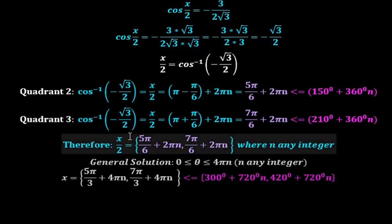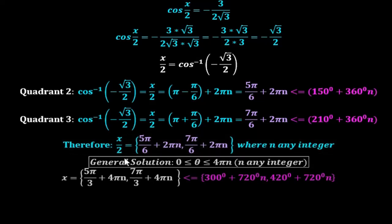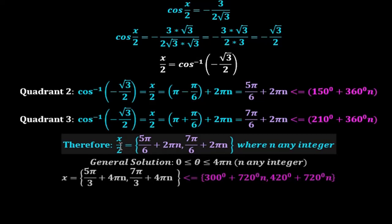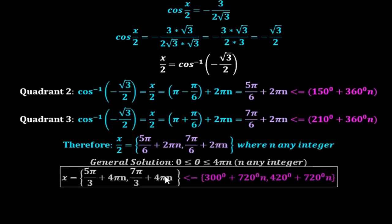Notice that this was the solution for x/2, where one period is 2π. But the general solution — we are solving for x, where the general solution has x between 0 and 4π. So we need to multiply every term by 2: x/2 · 2 = x; 5π/6 · 2 = 5π/3; 2πn · 2 = 4πn; 7π/6 · 2 = 7π/3; 2πn · 2 = 4πn. So the solution is x = 5π/3 + 4πn and x = 7π/3 + 4πn.